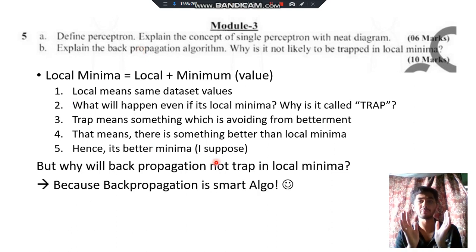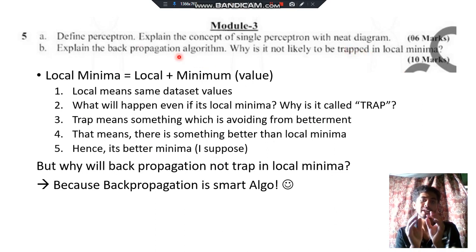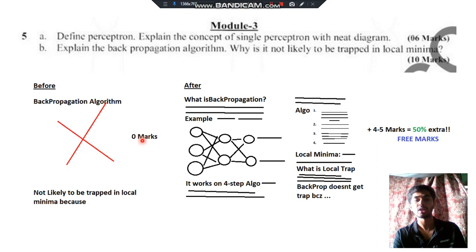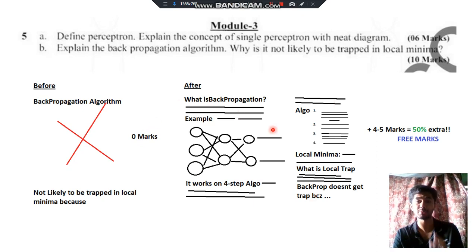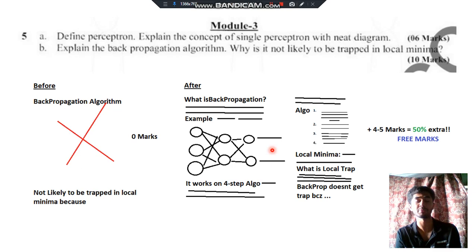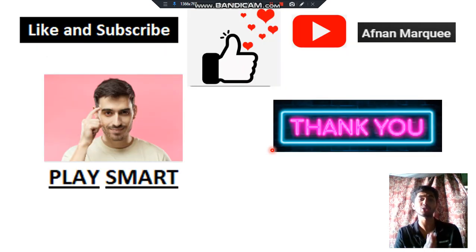Remember: backpropagation is a smart algorithm — that's why it's not likely to get trapped. You don't know the exact factor, so write some related factor neatly. Before learning this, you might leave it blank and get zero marks. After applying these strategies, you can easily fill the content and it's not limited to just this topic — you can write whatever you know surrounding it to maximize your marks, getting an extra 50 percent easily. Make sure to like and subscribe for more videos. Thank you for watching — see you in the next one.